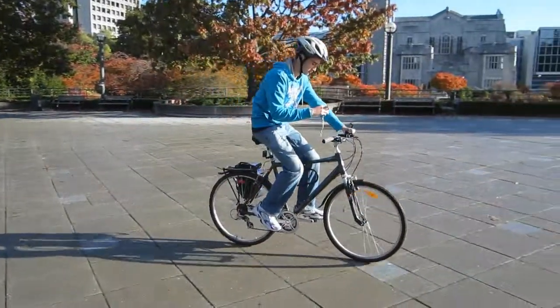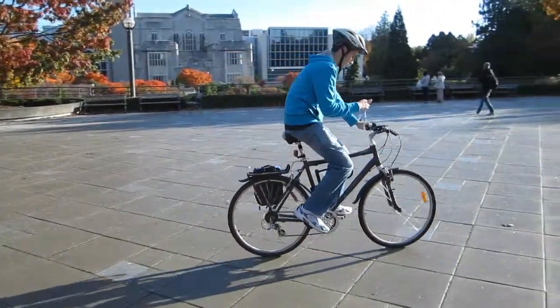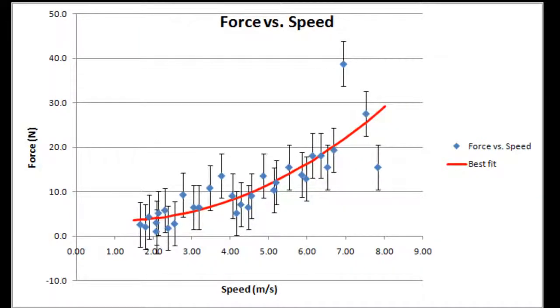While you do this, record the speed of the bike measured by the speedometer using a video camera. Later on, we will use this data to estimate the deceleration of the bike, and thus the force on the bike as a function of velocity.